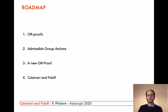In the following, I'll recall what an OR proof is and I'll give the definition of admissible group actions. Then I'm going to present the new OR proof, and finally I'll give a few details about Calamari and Falafel.